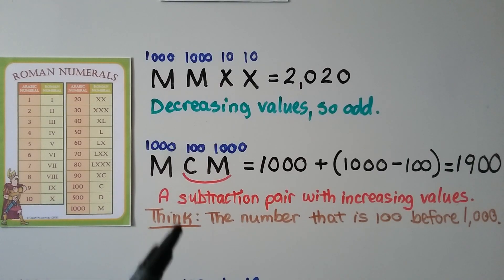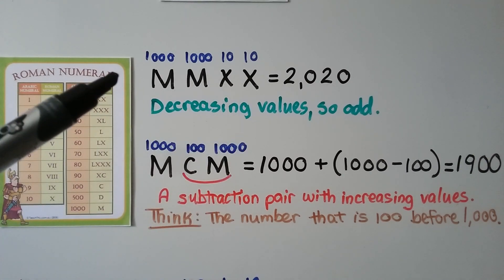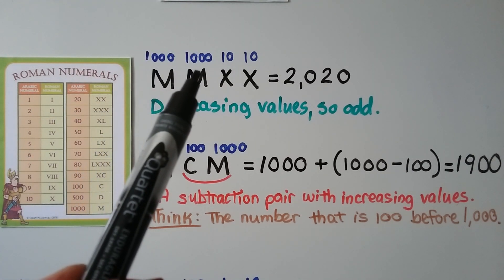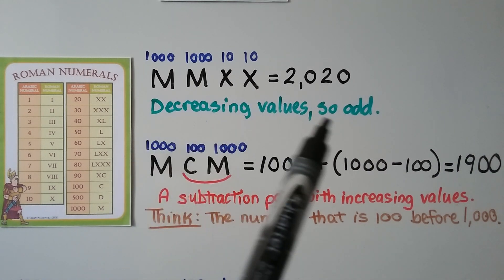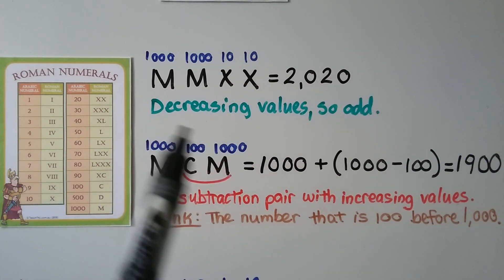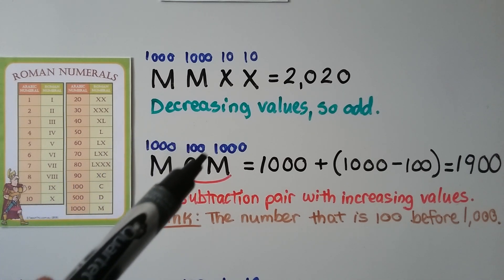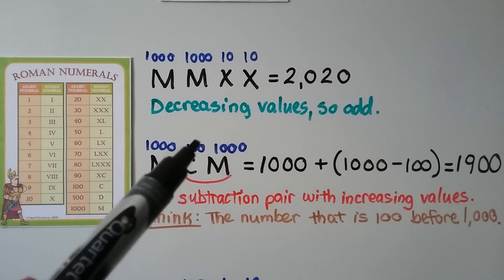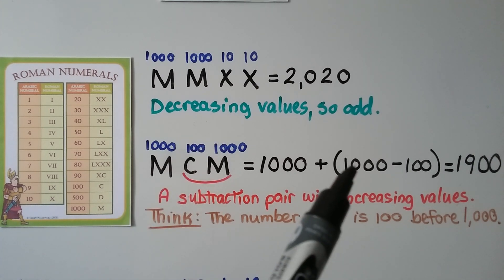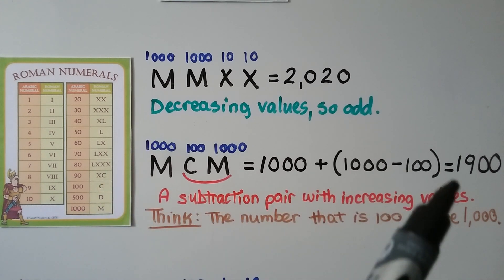M equals 1,000. Here we have MMXX: 1,000 plus 1,000 plus 10 plus 10. The values are all decreasing — going from 1,000 down to 10 — so we add them: 1,000, 2,000, then plus 20 equals 2,020. For MCM, we look for subtraction pairs first. We go from 1,000 down to 100, but then back up to 1,000 — because it goes back up, that makes a subtraction pair. So we have 1,000 plus the pair CM, which is 1,000 minus 100 equals 900: that's 1,900.